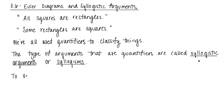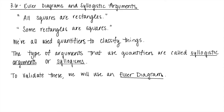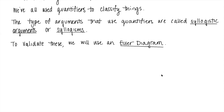To validate these, we will use what's known as an Euler diagram. So 'Euler' — I know it looks like 'Euler,' but it's 'Oiler.' It is a mathematician, a person's name. Do I care if you pronounce it right? Not really, but this way when I mention it you know what I'm talking about.